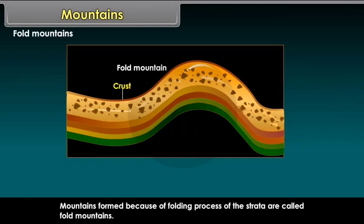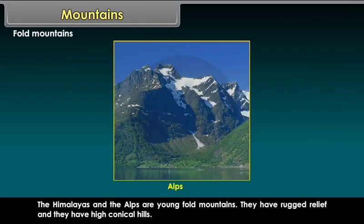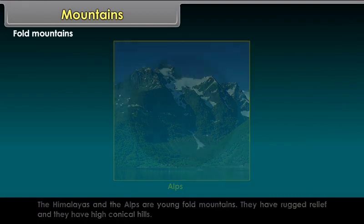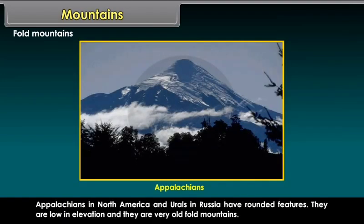Fold Mountains. Mountains formed because of the folding process of the strata are called fold mountains. The Himalayas and the Alps are young fold mountains; they have rugged relief and high conical hills. Aravallis in India are old fold mountains, worn down by the processes of erosion. Appalachians in North America and Urals in Russia have rounded features — they are low in elevation and are very old fold mountains.